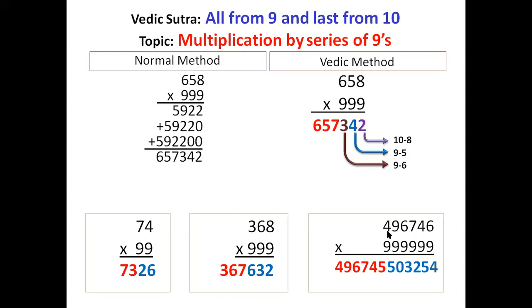In second step, 9 minus 4 is 5. 9 minus 9 is 0. 9 minus 6 is 3. 9 minus 7 is 2. 9 minus 4 is 5. And last from 10, 10 minus 6 is 4.